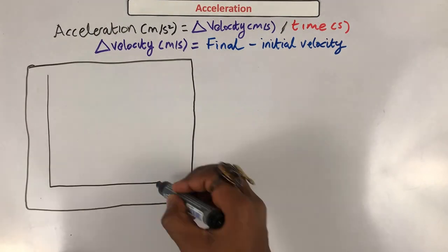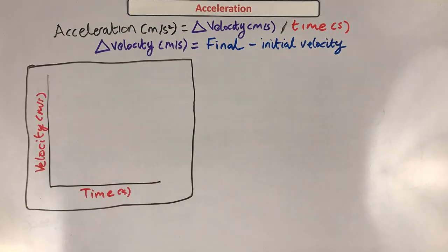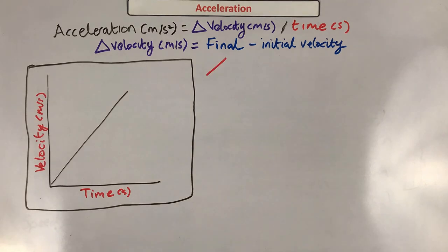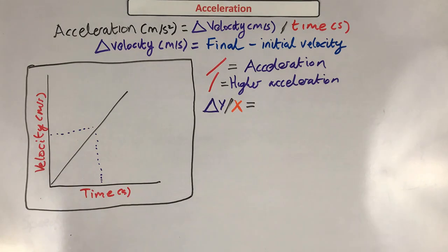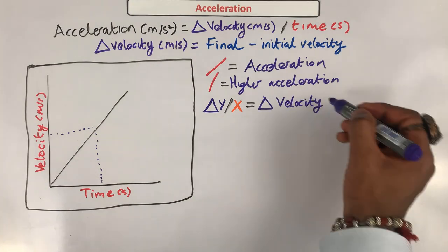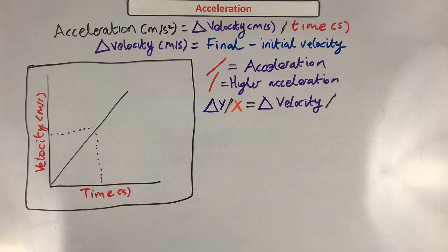The graph that helps us work out acceleration is a velocity-time graph. The y-axis is velocity, not distance, which means the lines mean completely different things. A straight line going up shows the object is accelerating — the steeper the line, the higher the acceleration. Finding the acceleration from a straight line uses the gradient: delta y divided by x equals delta velocity divided by time, giving acceleration.